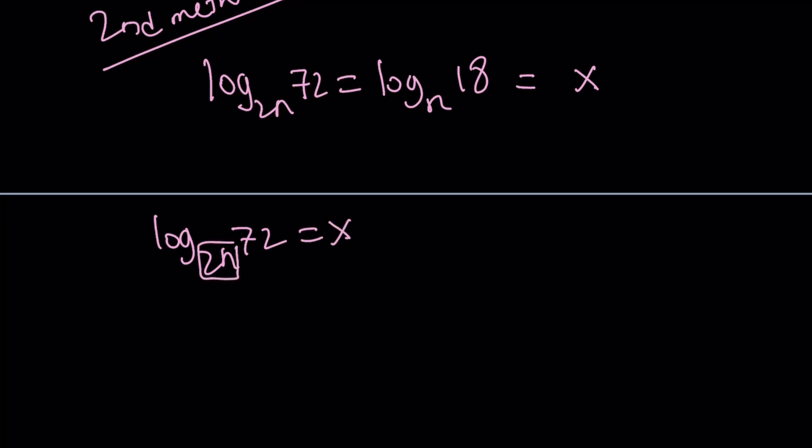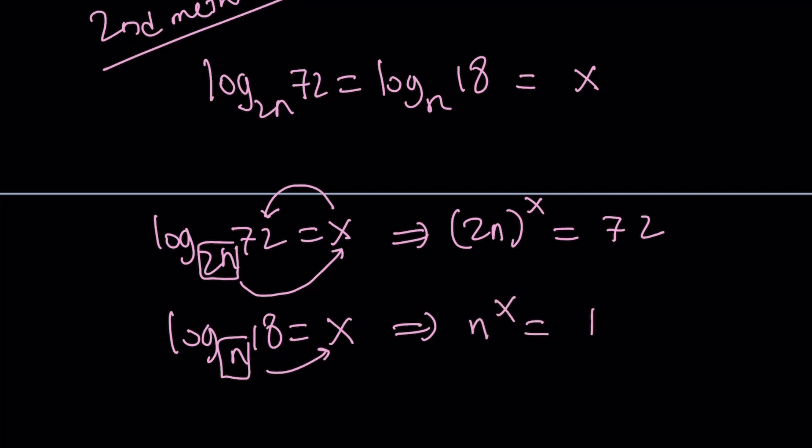Start here, that's the base, and that's the exponent, and this is the result. That's what the definition says. So from here, we can say 2n to the power of x equals 72. And from the second equation, we can do something similar. This is the base, so start here and then go here. n to the power of x equals 18.